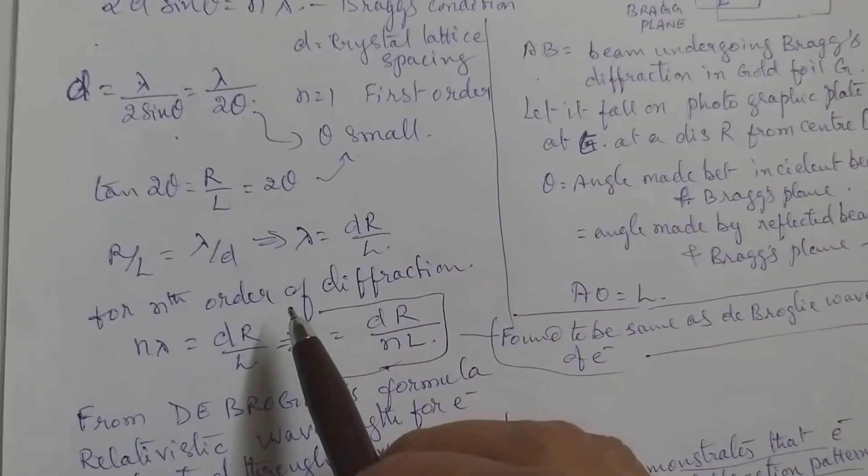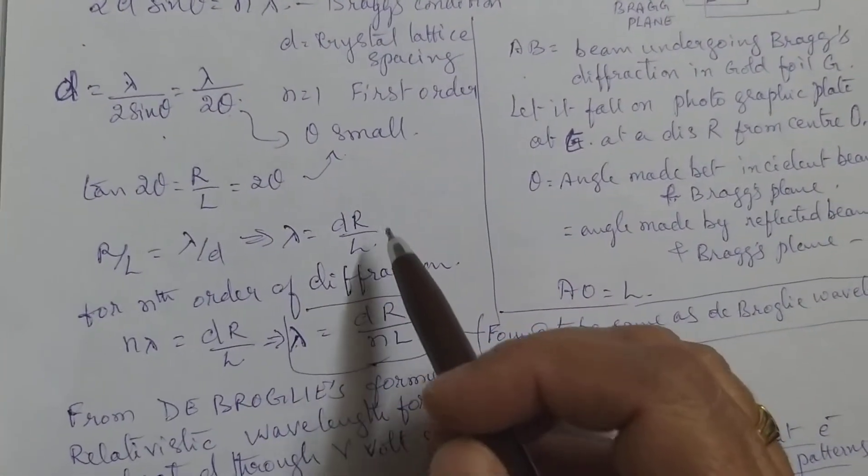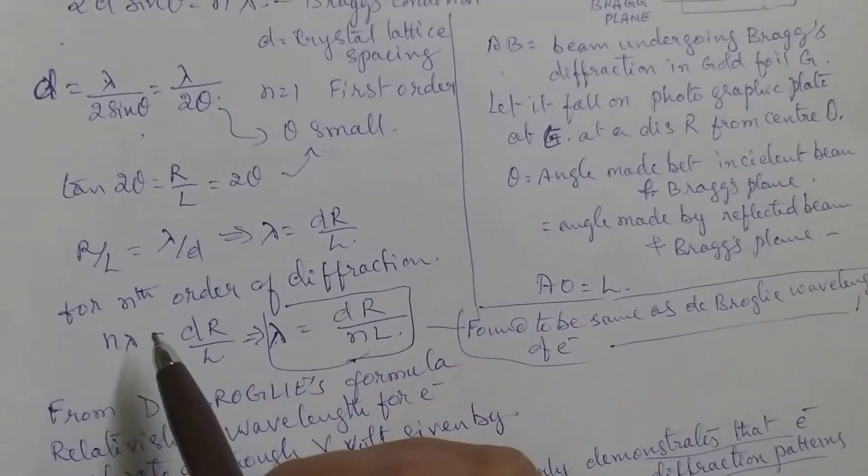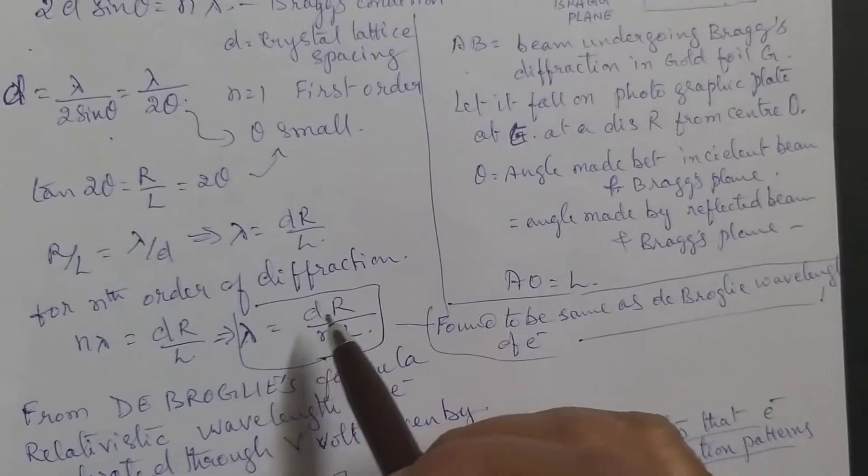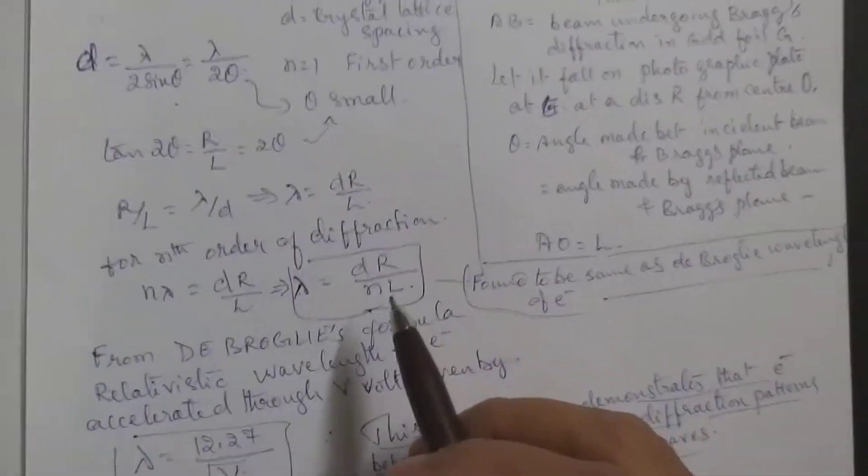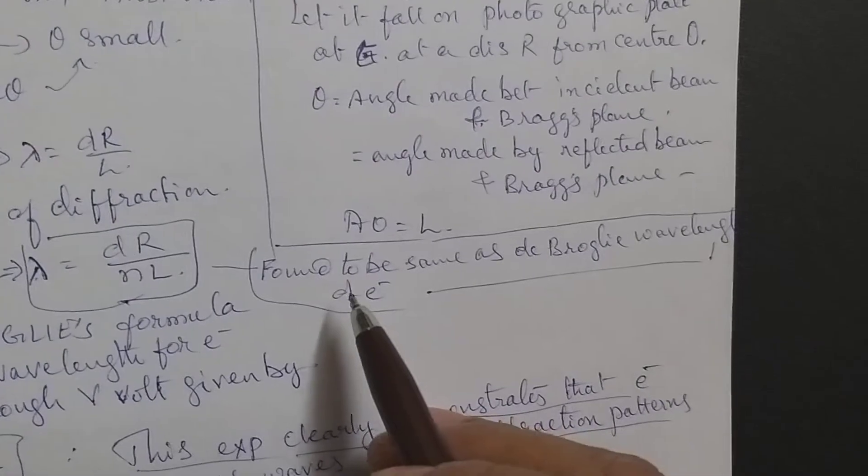Lambda equals dr by l. These are the physical things which we can measure. For nth order, it will be n lambda equals dr by l, or lambda equal to dr by nl.